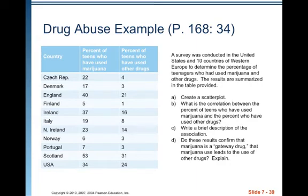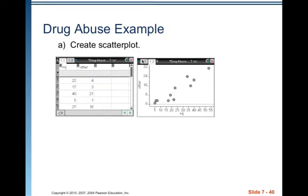Create one list and call it marijuana, create another list and call it drugs, and put in the data. Make sure everything is paired up appropriately — the 22 and 4 for the Czech Republic represent that particular country as one individual. You're going to create a scatterplot, find the correlation, write a brief description of the association, and then answer the question of whether these results confirm that marijuana is a gateway drug that causes the use of other drugs.